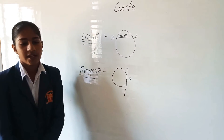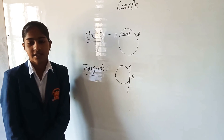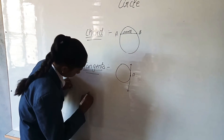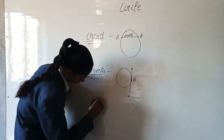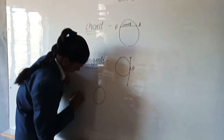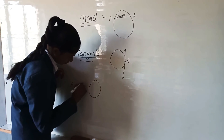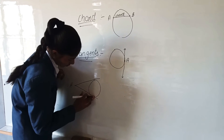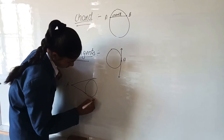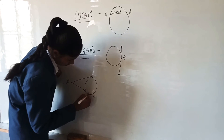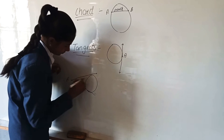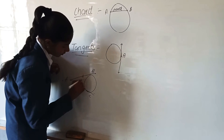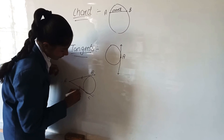From an exterior point of the circle, we can draw two tangents. The two tangents are equal in length.